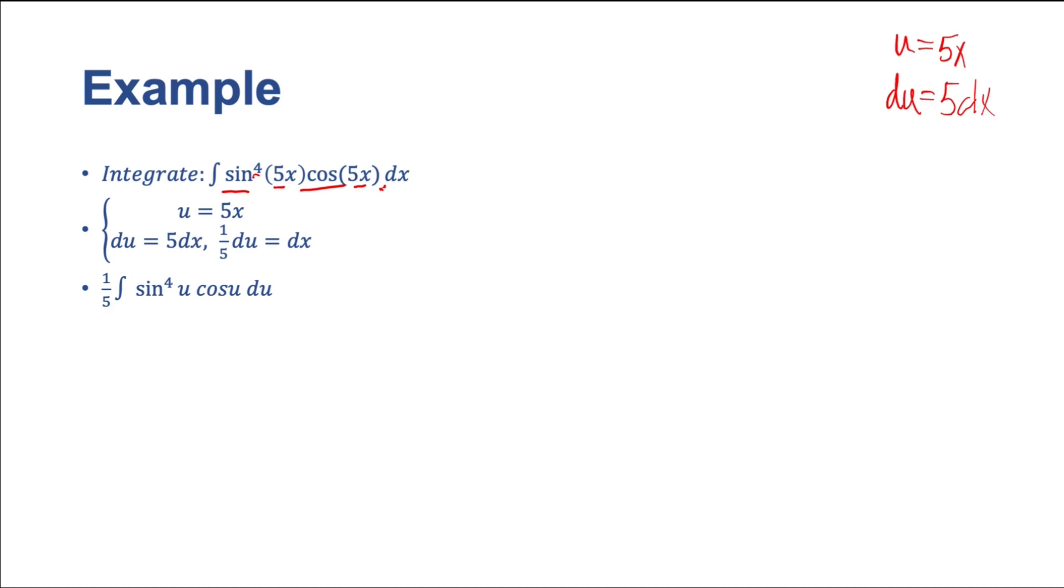Now, I would hope that you would see another substitution coming because here we have a sine and a cosine, no problem in the argument. And we know cosine is the derivative of sine. We've got sine to the power of four. You should be able to do this substitution now in your head. But I will continue to do it with the brackets so we can make sure we know what we're doing.